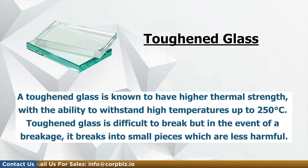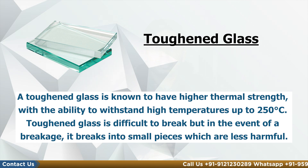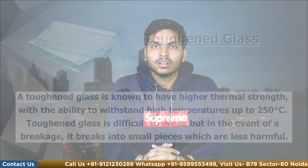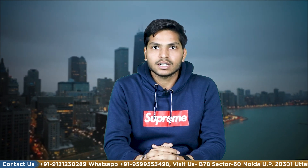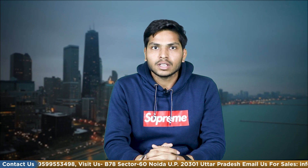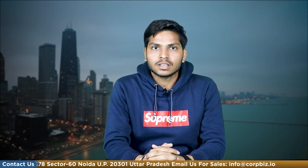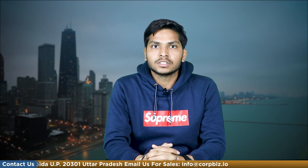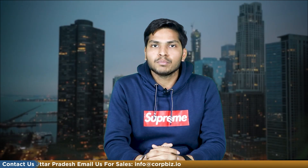Toughened safety glass has higher thermal strength with the ability to withstand higher temperatures up to 250 degrees Celsius. Toughened glass is difficult to break, but in the event of breakage, it breaks into small pieces which are less harmful. Laminated safety glass holds together when broken, held in place by a thin polymer layer known as PVB — polyvinyl butyral.